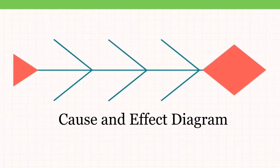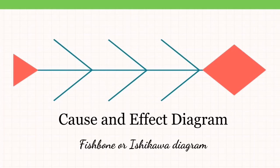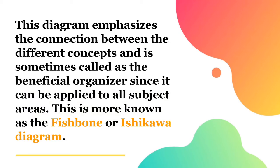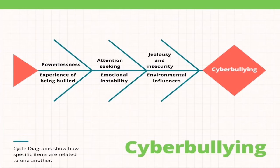Here are examples of non-linear text. First, the cause and effect diagram emphasizes the connection between different concepts and is sometimes called the most beneficial organizer since it can be applied to all subject areas. This is more known as the fishbone or Ishikawa diagram. In this example, powerlessness, attention-seeking, jealousy and insecurity, experience of being bullied, emotional instability, and environmental influences are the possible causes of cyberbullying.